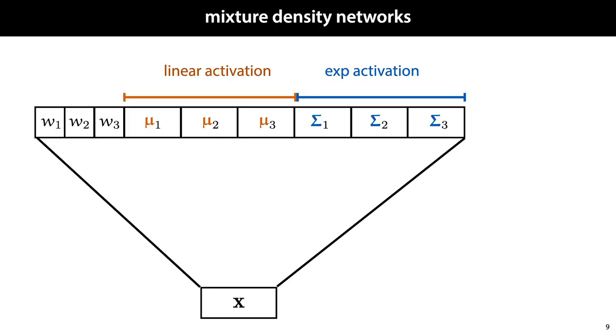If we want to go all out, we can even make our neural network output the parameters of a Gaussian mixture. This is called a mixture density network. All we need to do is make sure that we have one output node for every parameter required and to apply different activations to the different kinds of parameters. The means, as we saw before, get a linear activation and the covariances get an exponential activation. The weights need to sum to one, so we need to give them a softmax activation.